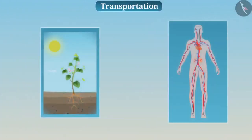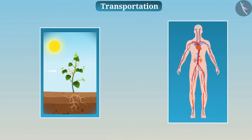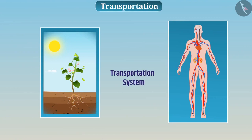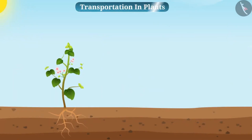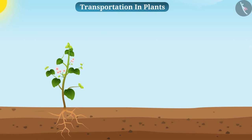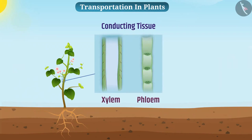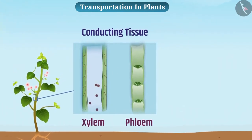The process of transportation of various substances in the body of the organism is accomplished by the transportation system. In plants, the function of transportation of various substances takes place with the help of conducting tissue — xylem and phloem. Xylem carries water and minerals while phloem carries food and other substances.